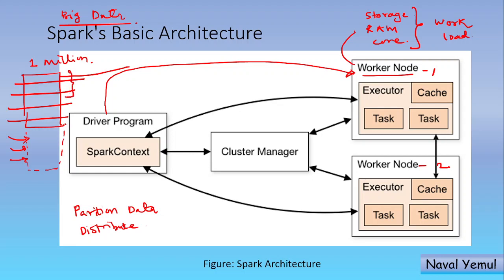First few rows are distributed to worker node 1, and the second few rows are distributed to worker node 2. Worker node 2 stores the partitioned data into different cores. So now all your data is partitioned and then distributed across different worker nodes and across different cores.